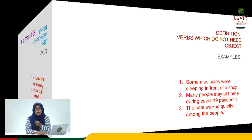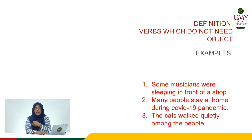Now what about intransitive action verbs? Intransitive action verbs are verbs which do not need an object. In sentence number one, 'Some musicians were sleeping in front of a shop' — the verb 'were sleeping' does not need any object. In sentence number two, 'Many people stay at home during the COVID-19 pandemic' — the verb 'stay' does not need any object. In sentence number three, 'The cats walk quietly' — the verb also does not need any object. That is the intransitive verb.